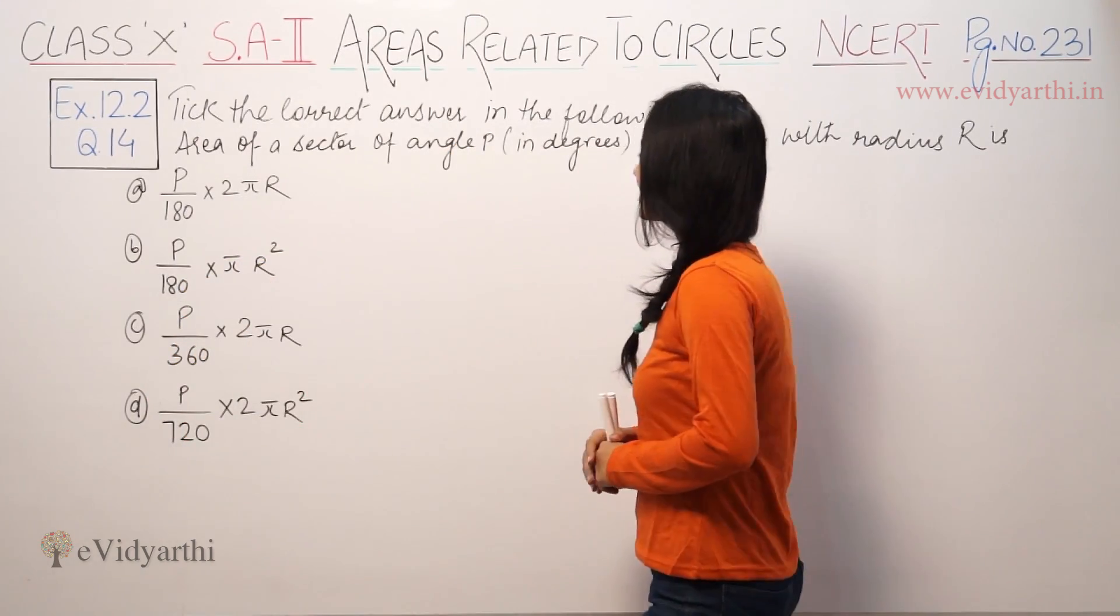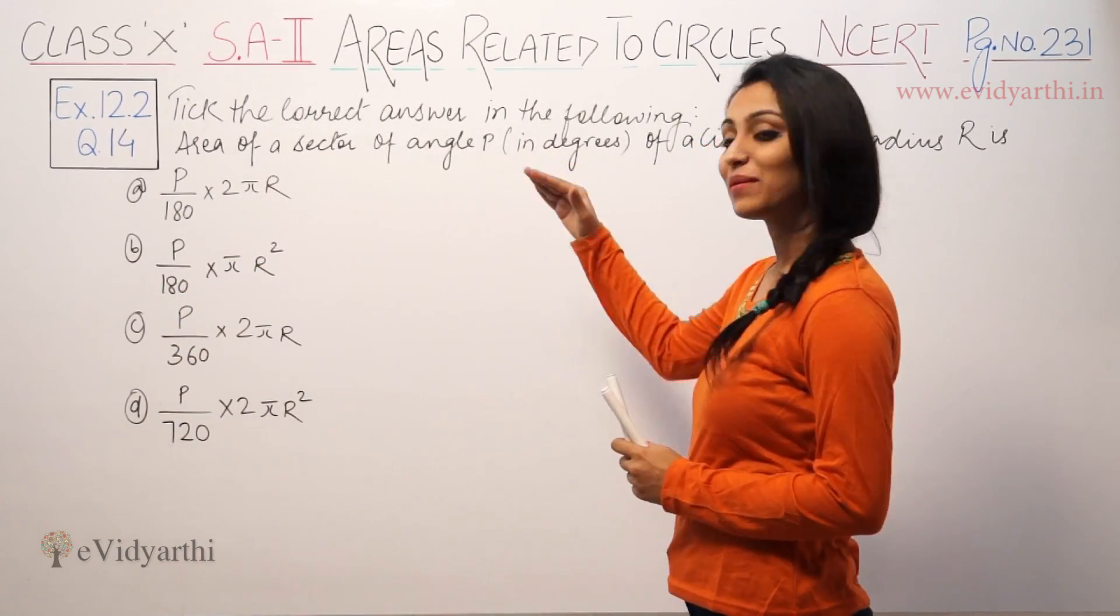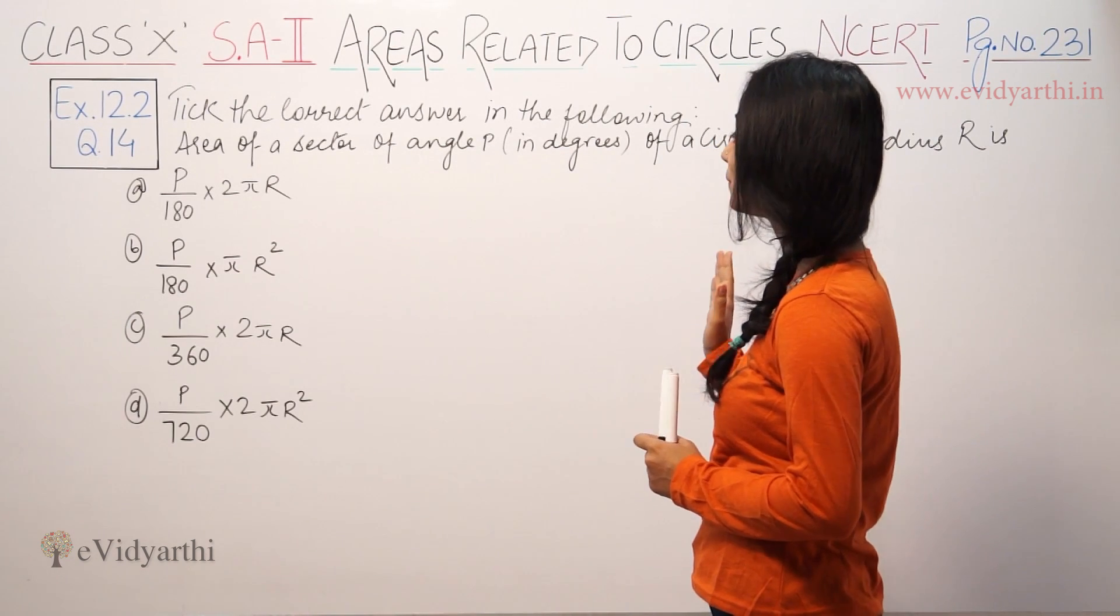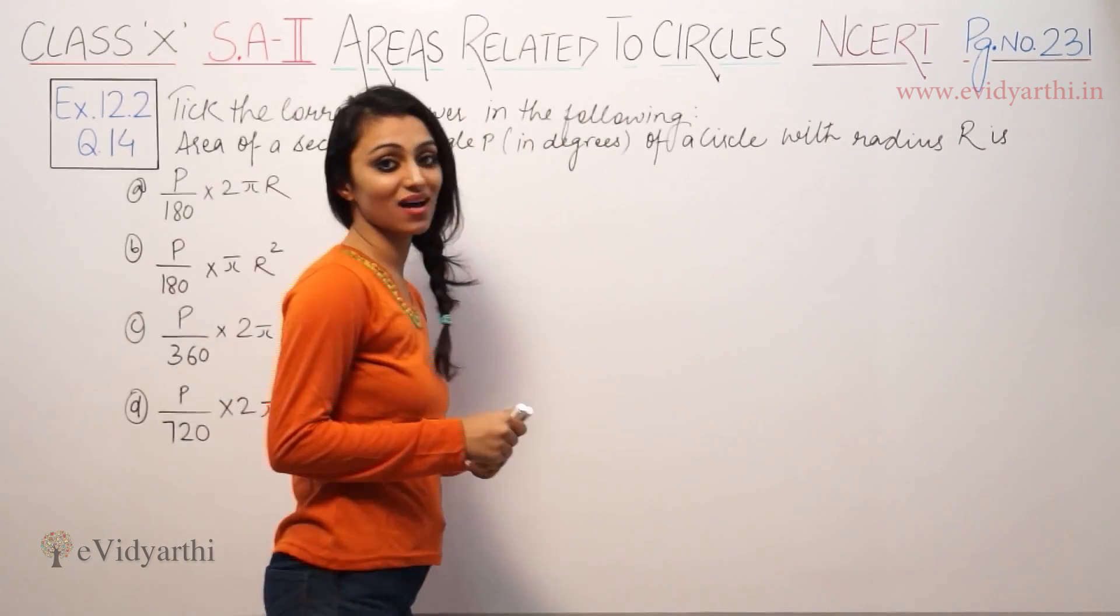This thing is, tick the correct answer in the following. We have given the correct answer. Area of sector of angle P in degrees of a circle with radius R.